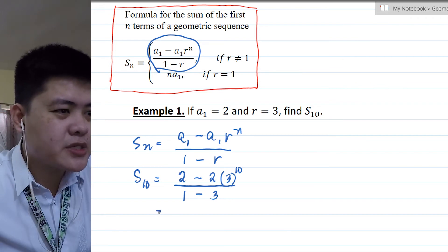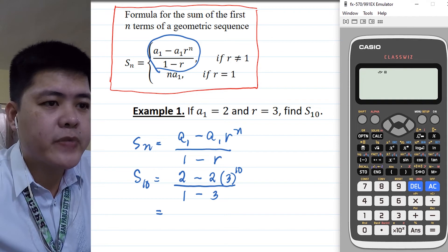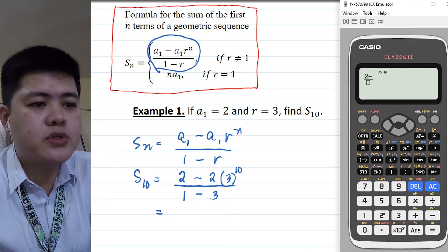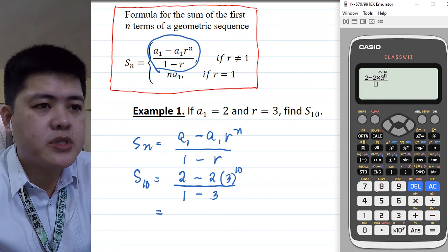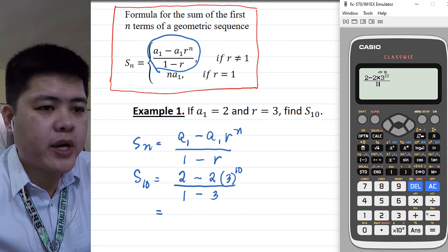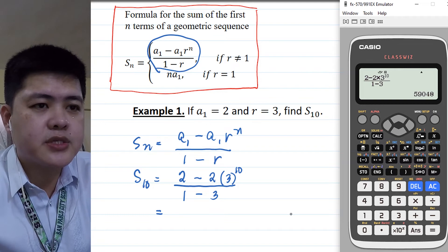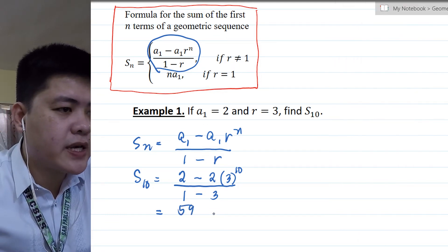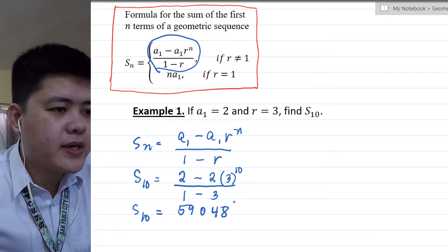Let's compute using calculator. We have 2 minus 2 times 3 raised to 10 divided by 1 minus 3. So the answer is 59,048. So you have the value of S of 10.